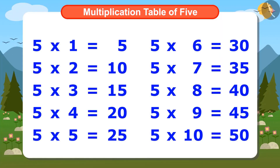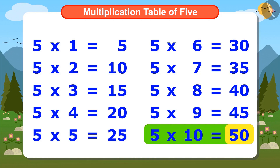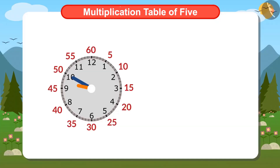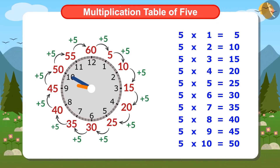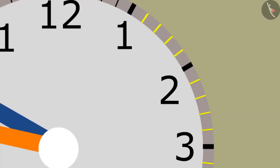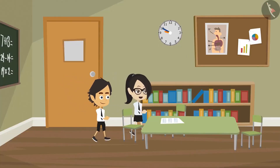Look at the multiplication table of 5. 5 times 10 is 50. In the multiplication table of 5, 5 multiplied by 10 is 50. I also know the multiplication table of 5, but I never thought it could be used to find the minutes. Now you can also use the multiplication table of 5 to see the minutes. You do not have to count the minutes one by one. Yes, I will do this now.